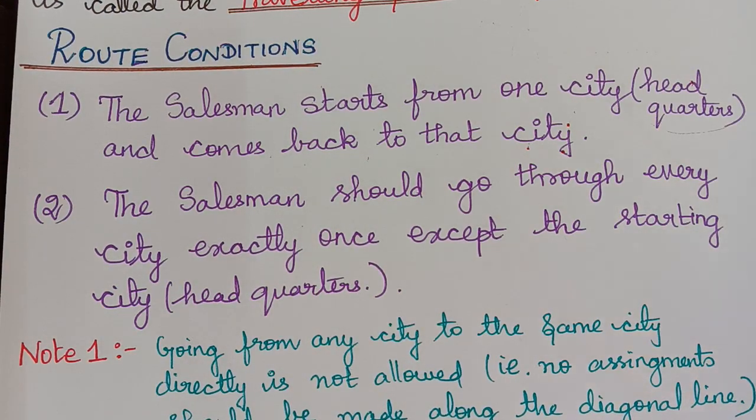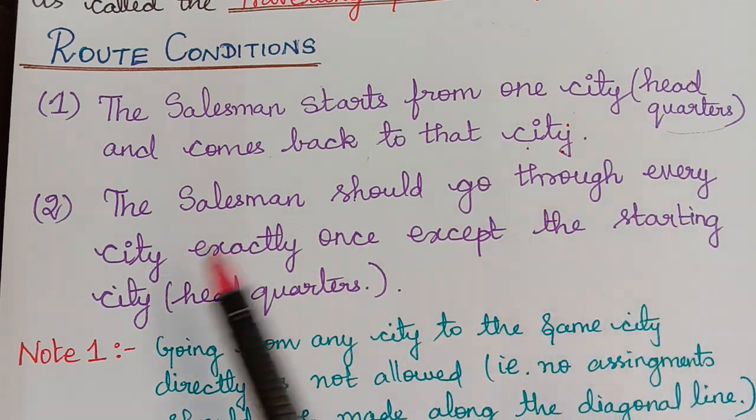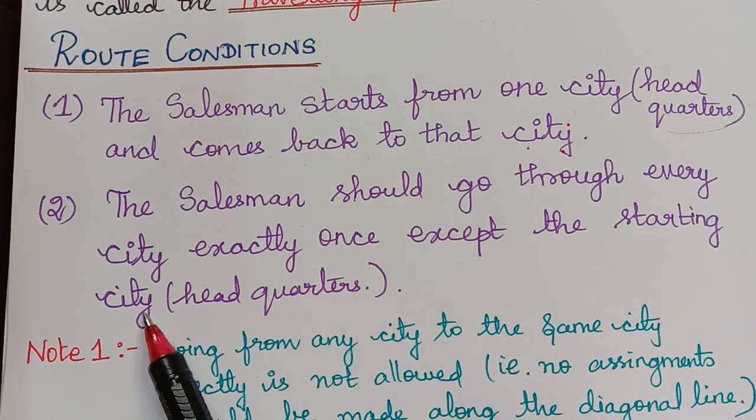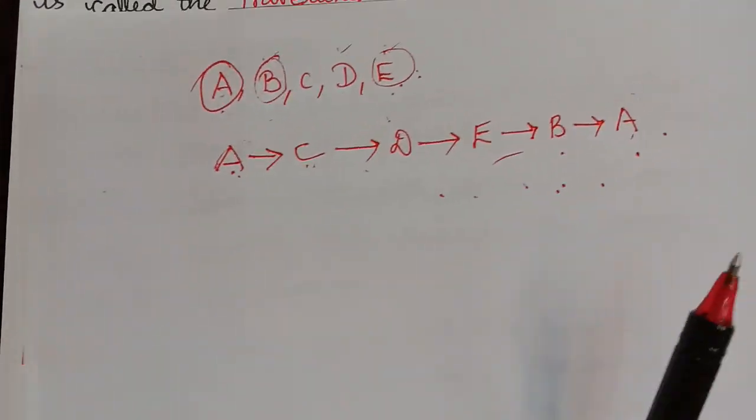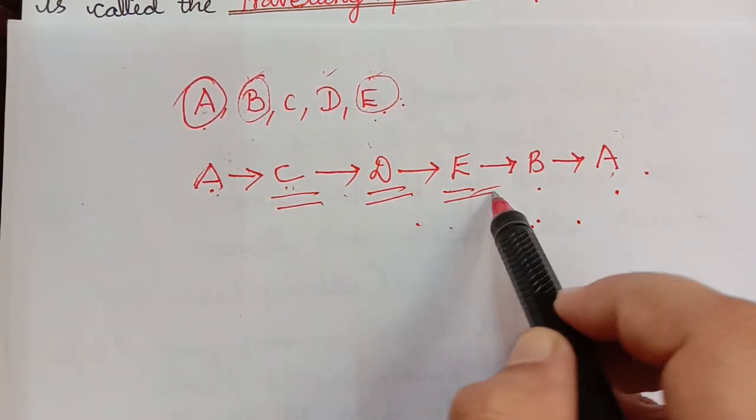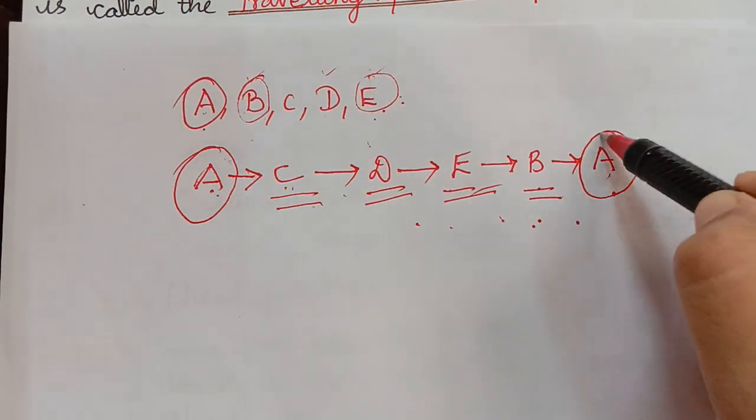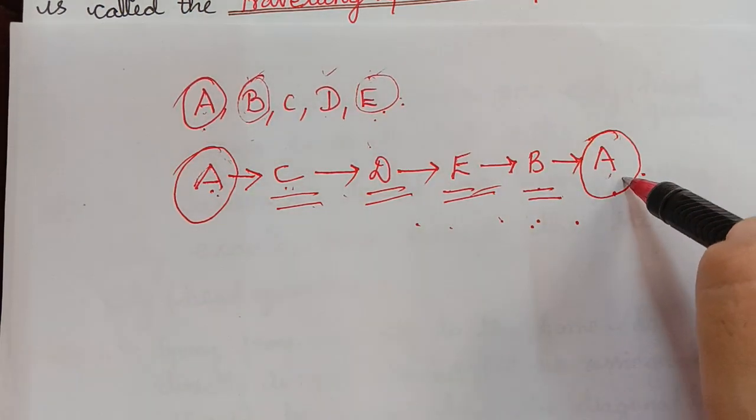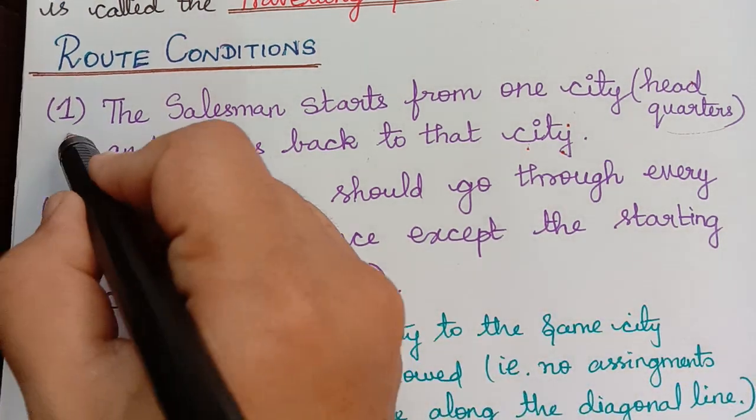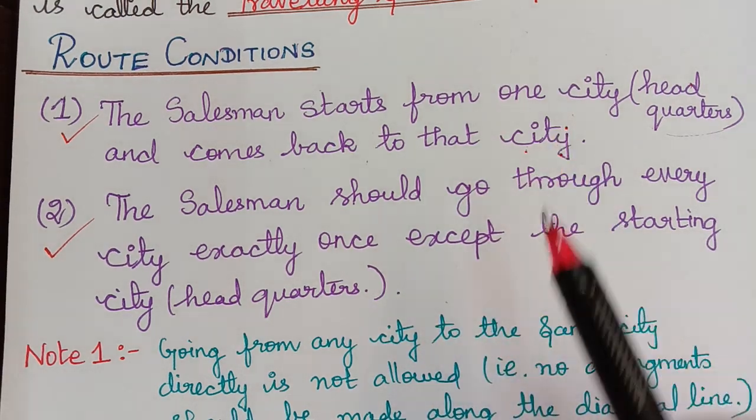And the second condition is the salesman should go through every city exactly once except the starting city. That is what I showed you here. Every city has been traveled only once. So we can see that the starting city was repeated once more when he came back to it. So these are the two route conditions which are very importantly necessary for a traveling salesman problem.